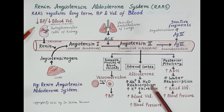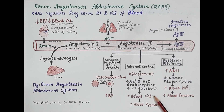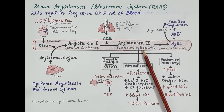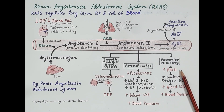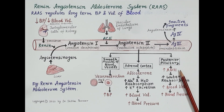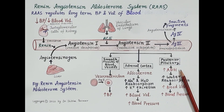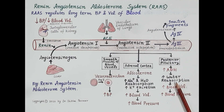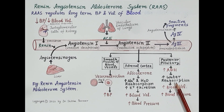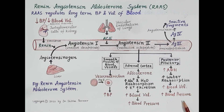Angiotensin 2 also stimulates the posterior pituitary to increase release of Anti-Diuretic Hormone (ADH). As the name suggests, ADH inhibits diuresis — the excessive production of urine and loss of body fluids. ADH inhibits diuresis by increasing reabsorption of water in the collecting duct of the kidney. This increased water reabsorption raises blood volume and further increases blood pressure.